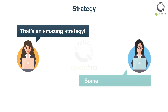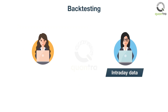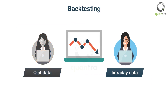Elsa, who isn't impressed with extremely good results, decides to do a thorough backtest. But she uses intraday data, or minute-level data, instead of the OHLC data used by Anna. And lo and behold, it performs pathetically.